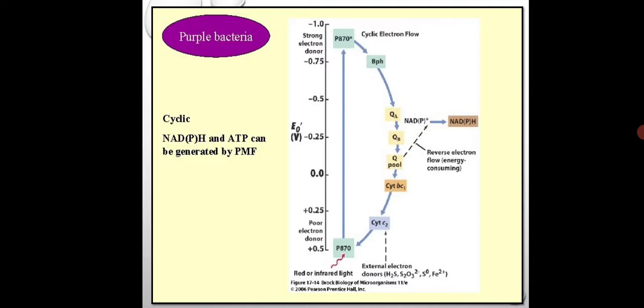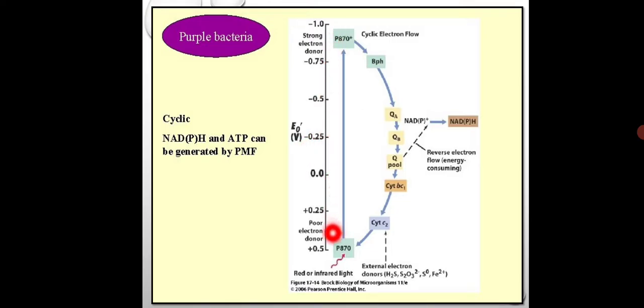In this lecture, we are going to see the term called reverse electron flow, also known as autotrophy in purple bacteria. Here there is a transfer of electrons, and the concept of reduction potential — the positive and negative values — indicates what happens on this scale of reduction potential, measured in volts.